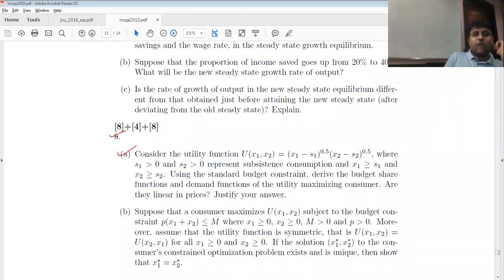When you look at question number 9a, from the Stone theory or utility function, you know that we'll get an x1 which is s1 plus m minus p1 s1 minus p2 s2 by p1 into alpha by alpha plus beta. So the entire expenditure on x1, p1 x1, will be equal to